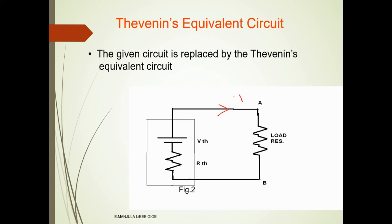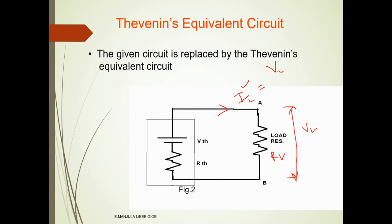The current passing through the load is Il and the voltage across the load is Vl. This is the load resistance Rl.